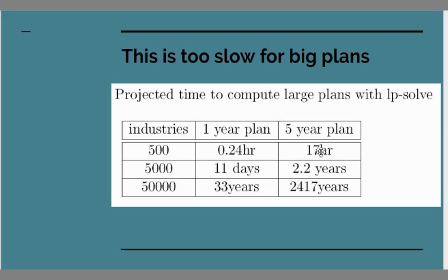However, as you start to disaggregate further and you want to control more industries in your planning regulations, say if you want to go up to a few thousand industries as Gosplan wanted to, well lpsolve techniques for a five-year plan would take two years. At this point it's already getting intractable. You can't afford to spend that time preparing your plan. If you went up to fifty thousand industries, we find we're taking two thousand four hundred years to prepare a five-year plan, which rather defeats the point. So clearly you need something that is a lot better than order n to the three.